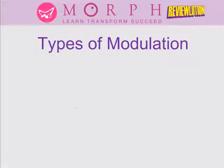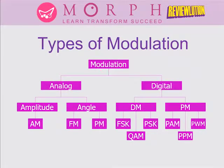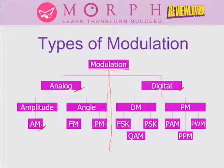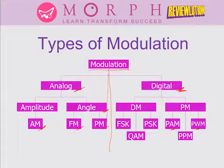Our topics today cover analog modulation only. Modulation is divided into analog and digital. Later in the course we will deal with digital and data communications — FSK, PSK, QAM, pulse amplitude, pulse position, and pulse width modulation. For now, we focus specifically on analog and specifically on Amplitude Modulation.